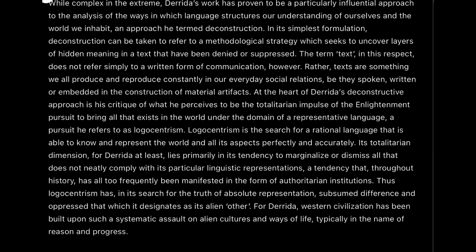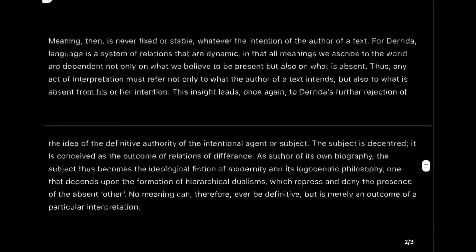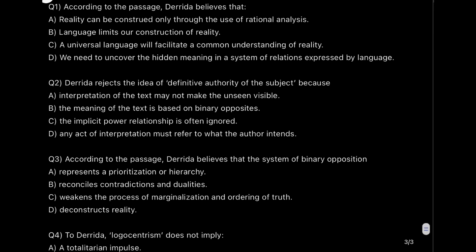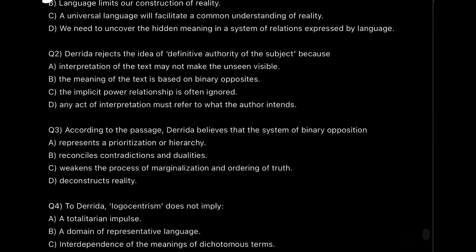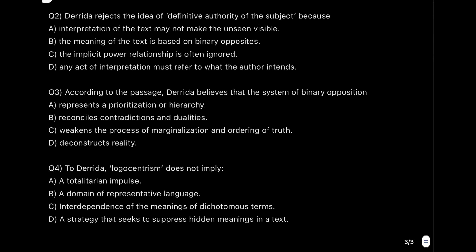Before we start reading, let's quickly look at the questions. Question one: 'According to the passage, Derrida believes that...' — so Derrida is the key person. Whenever Derrida and any statement related to him appears, we'll focus on that. Question two: 'Derrida rejects the idea of definitive authority of the subject because...' — so when we find 'definitive authority of subject,' we'll pay attention to why Derrida rejects it. Question three: 'According to the passage, Derrida believes that the system of binary opposition...' — so we'll focus on binary opposition whenever it appears.